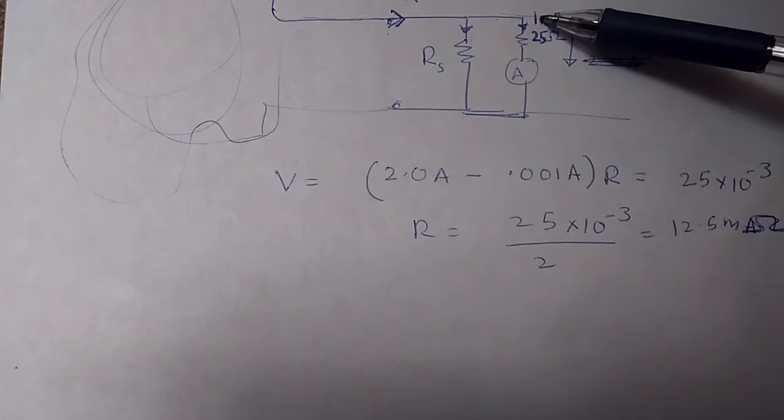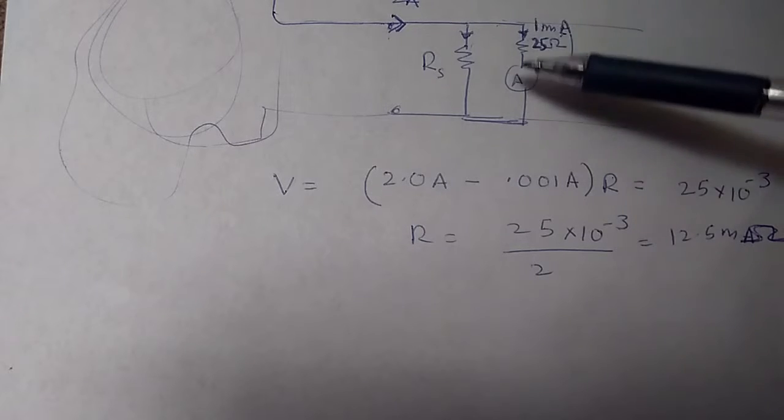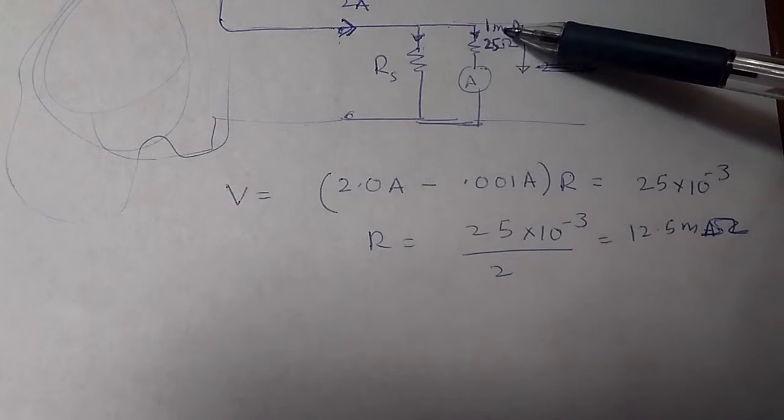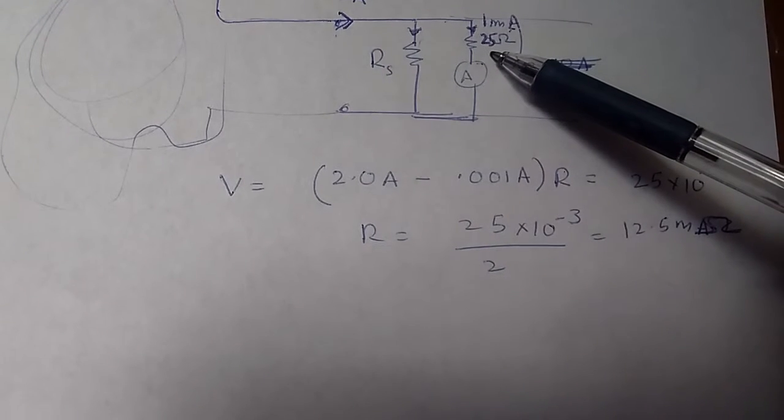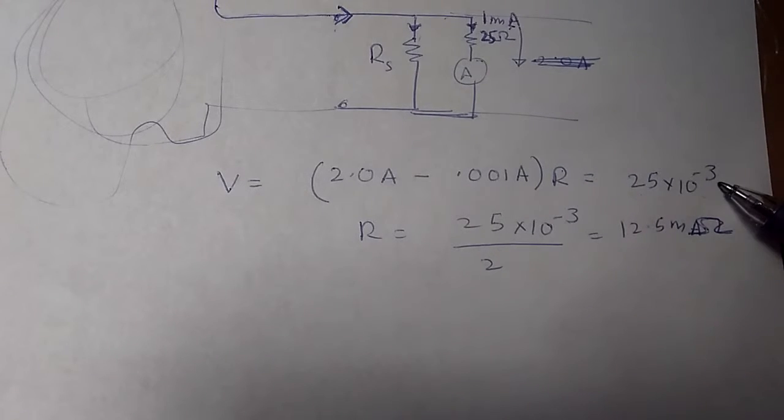Now with 1 mA and 25 ohm resistance, the voltage across the ammeter is going to be V = I × R. I is 1 mA or 10 to the power minus 3, and the resistance is 25 ohm, so it is 25 × 10 to the power minus 3 volts.